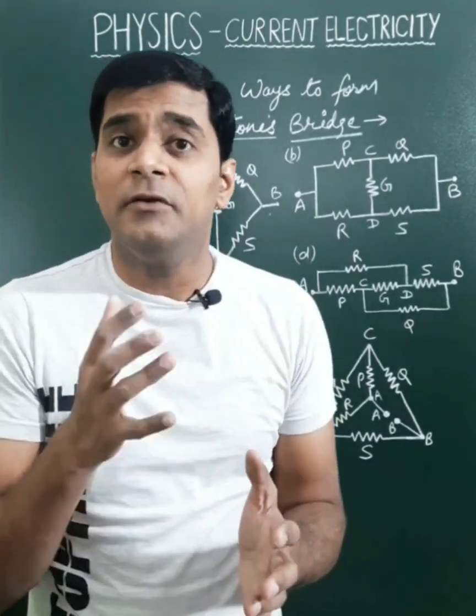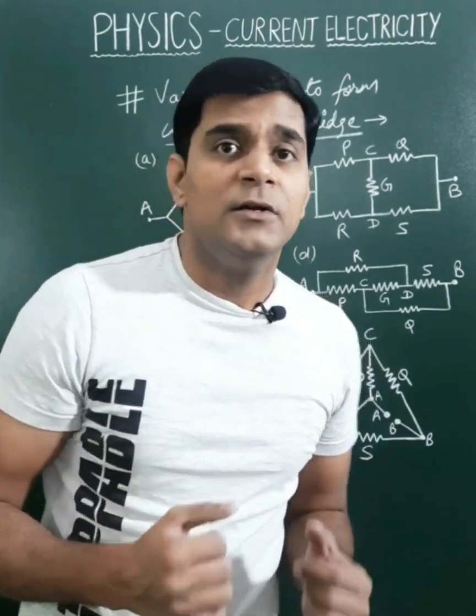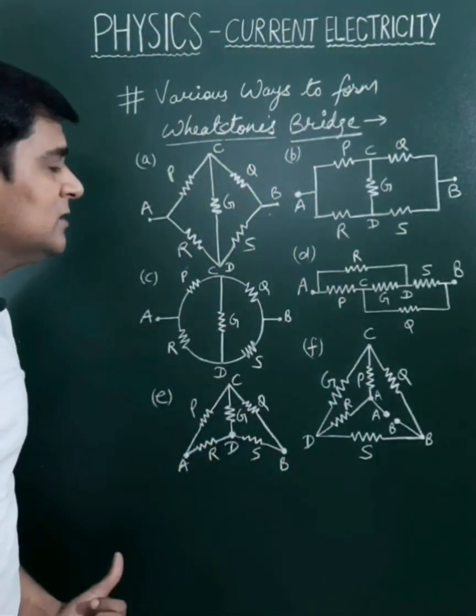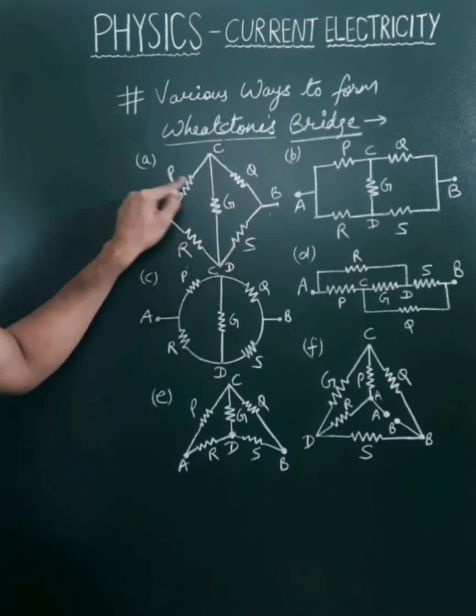There are so many different ways in which we can form a Wheatstone's bridge. Six ways I am explaining here. First, take the screenshot of this page. It is very important and the standard form which we generally found in the book is this one.